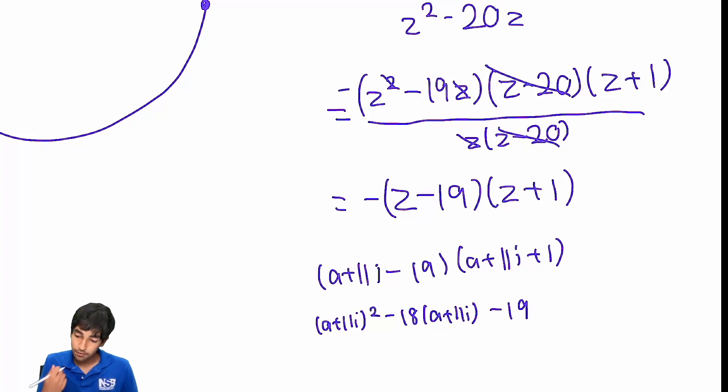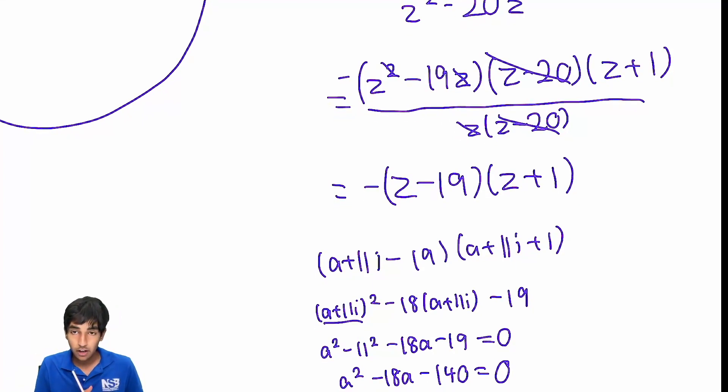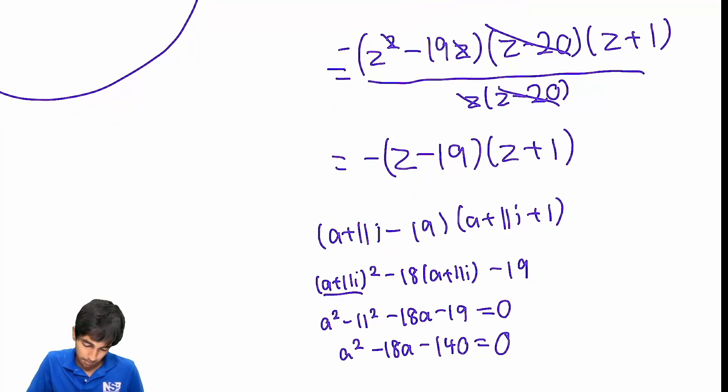So what is the real part of this? The real part has to be zero. The real part is a squared minus 11 squared for this first term, and then minus 18a for the next term and minus 19. This is all zero. a squared minus 18a minus 140 equals zero. So now all we have to do is solve for a. And to do this, we can use the quadratic formula. Or you can maybe complete the square. It can just be like (a minus 9) squared equals 221.